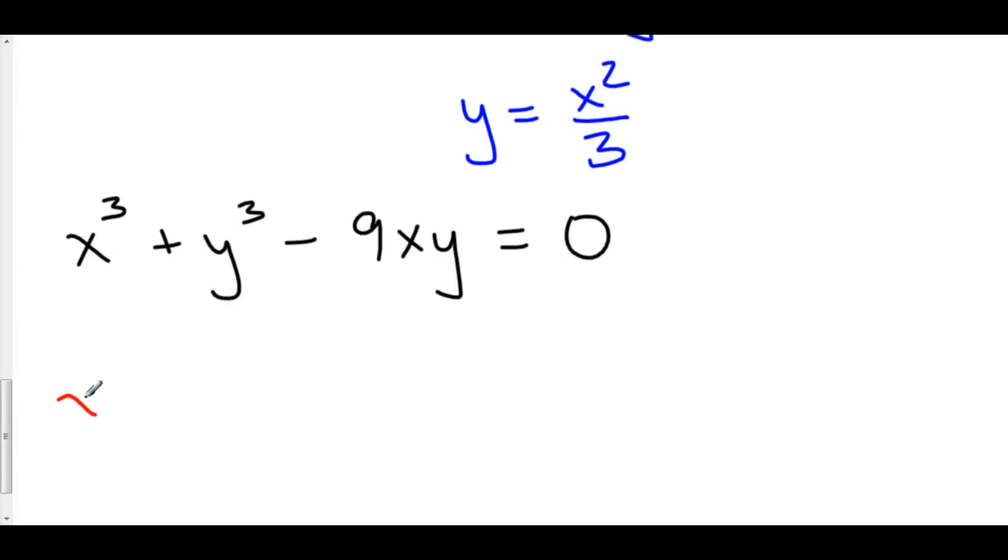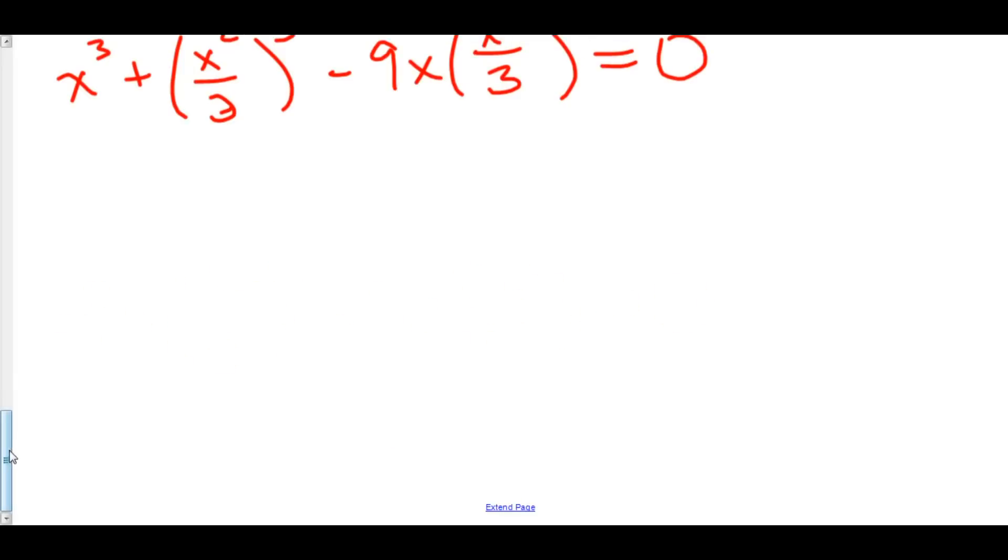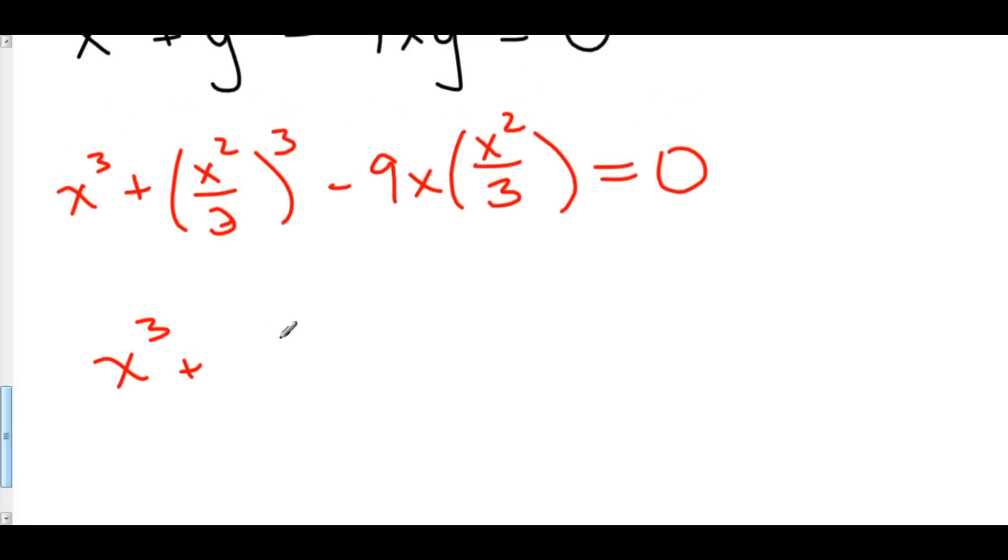So let's just substitute x squared over 3 in for y in our original equation. So here we have x cubed plus x squared over 3 cubed minus 9 times x times x squared over 3. And this is all equal to 0. Well, now we have x cubed plus x to the sixth over 3 cubed is 27 minus 9x cubed over 3 is 3x cubed. And this is all equal to 0.